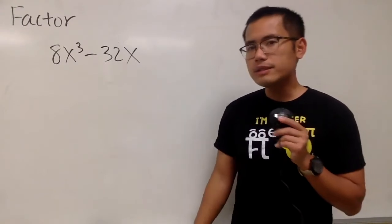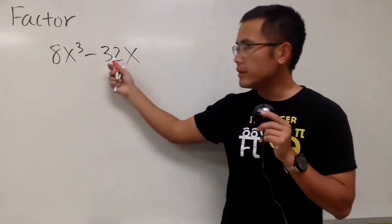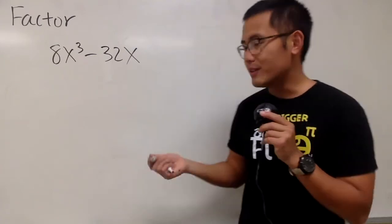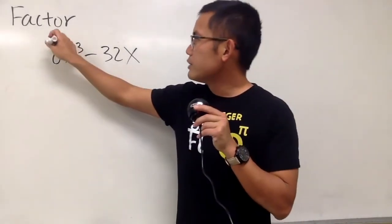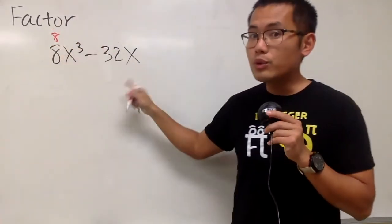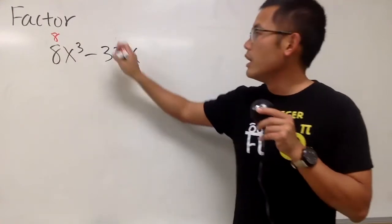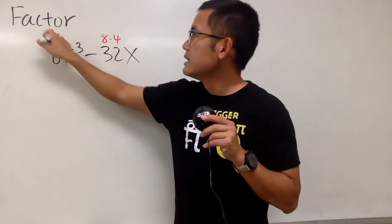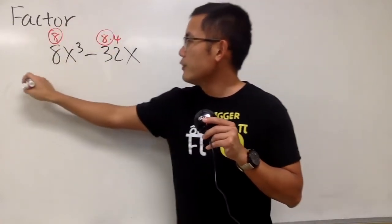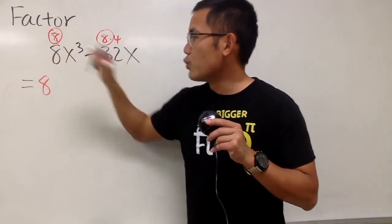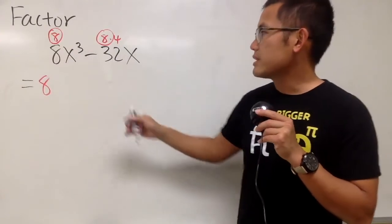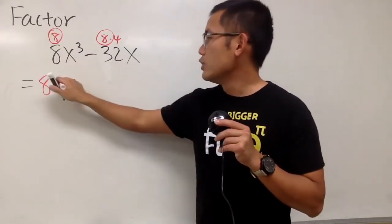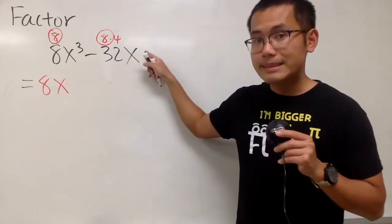Here we are going to factor 8x cubed minus 32x. We do have common factors, so let's go ahead and do that first. We know 8 goes into 32 — 8 times 4 is 32 — so the 8 is in common. Next, we can factor out an x from x cubed and x. You always factor out the x to the smaller power, which is x to the first.